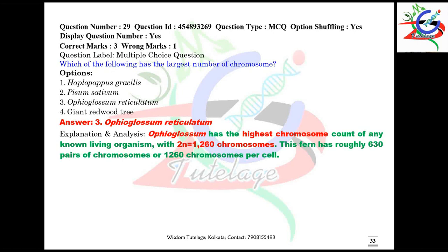Question number 29: which organism has the largest number of chromosomes? Ophioglossum reticulatum has the largest or highest number of chromosomes — it has 2n = 1260 chromosomes in a cell.